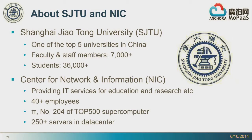First, some background material about Shanghai Jiao Tong University. It's located in Shanghai, and it's one of the top five universities in China. There are over 40,000 faculty, staff members, and students. The Center for Network Information provides IT service to the university community, particularly in the area of education and research. There are about 40 employees, and most of them are technical staff. There is a data center which has over 250 servers.